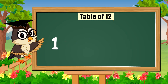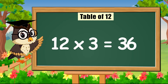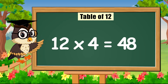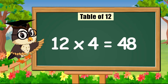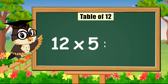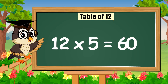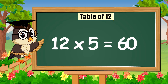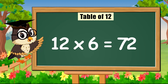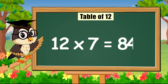Twelve times three is thirty-six. Twelve times four is forty-eight. Twelve times five is sixty. Twelve times six is seventy-two.